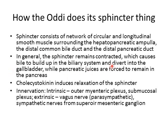When the duodenum secretes cholecystokinin, this causes relaxation of the sphincter. The common bile duct opens up allowing bile to flow in, the pancreatic duct opens up allowing pancreatic juice to flow, and then the ampulla of Vater opens up and everything flows out into the duodenum — all due to the influence of cholecystokinin.